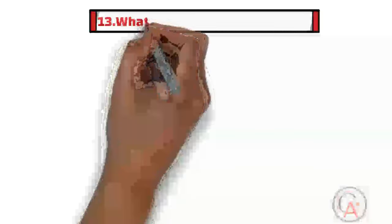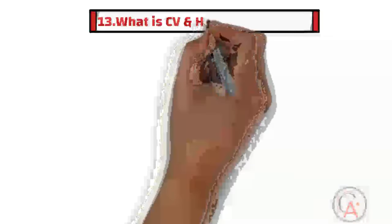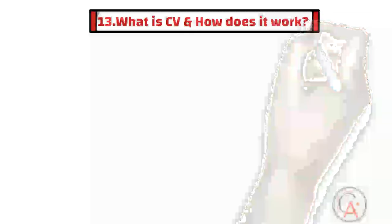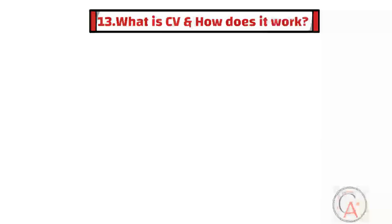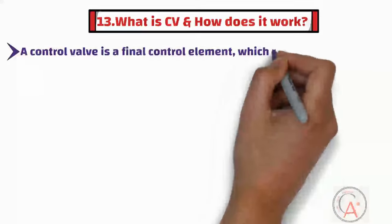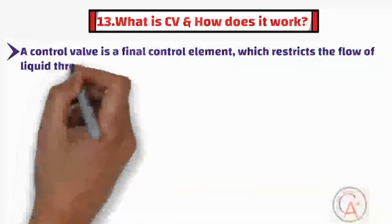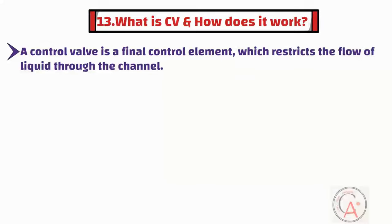The thirteenth question is: what is a control valve? A control valve is a final control element which restricts the flow of liquid through the channel. In other words, a control valve is a mechanical device used in various industrial processes to control the flow of a fluid such as gas, liquid, or steam through a system.